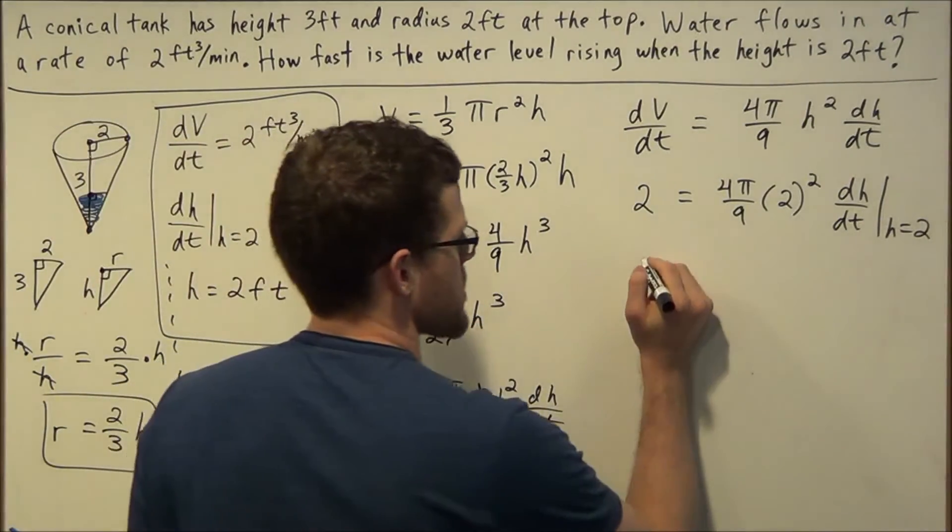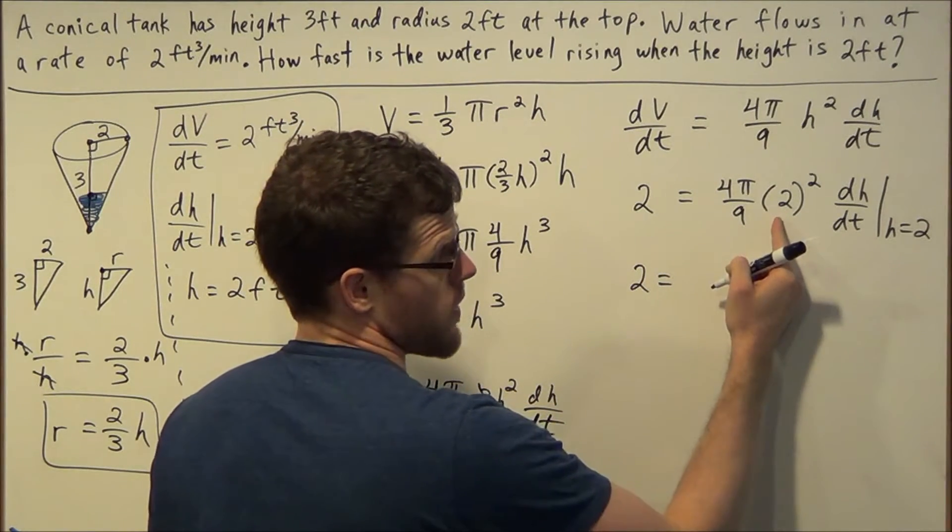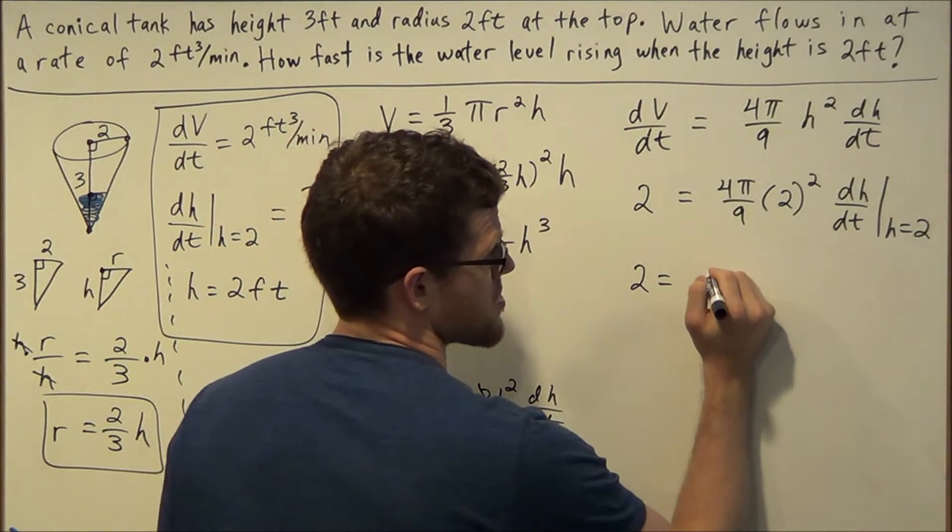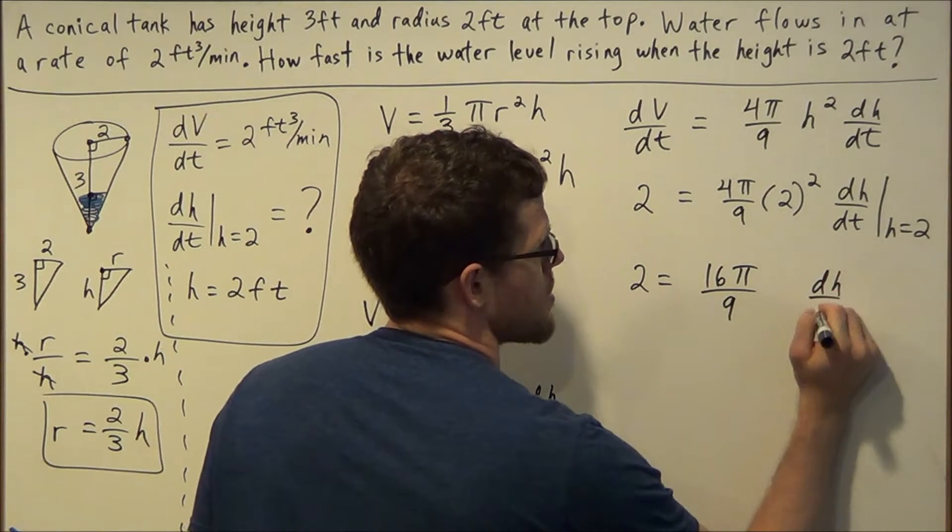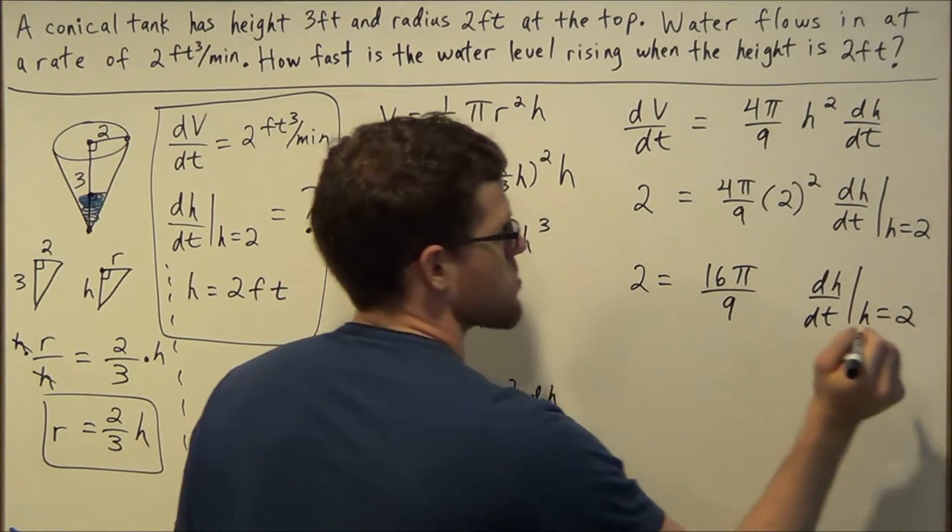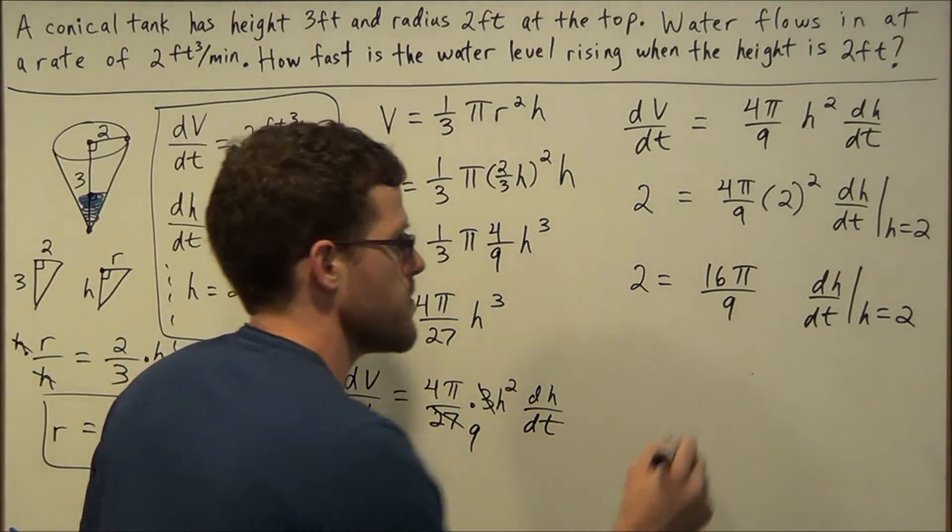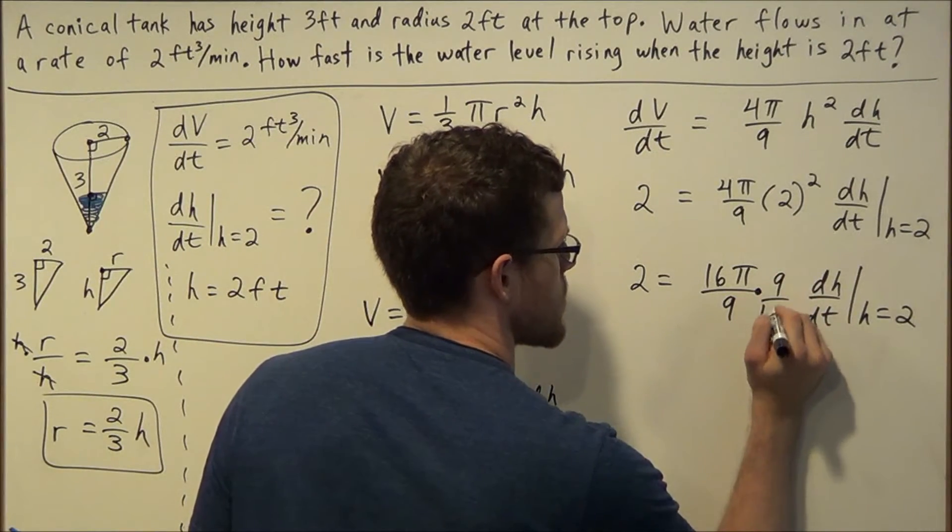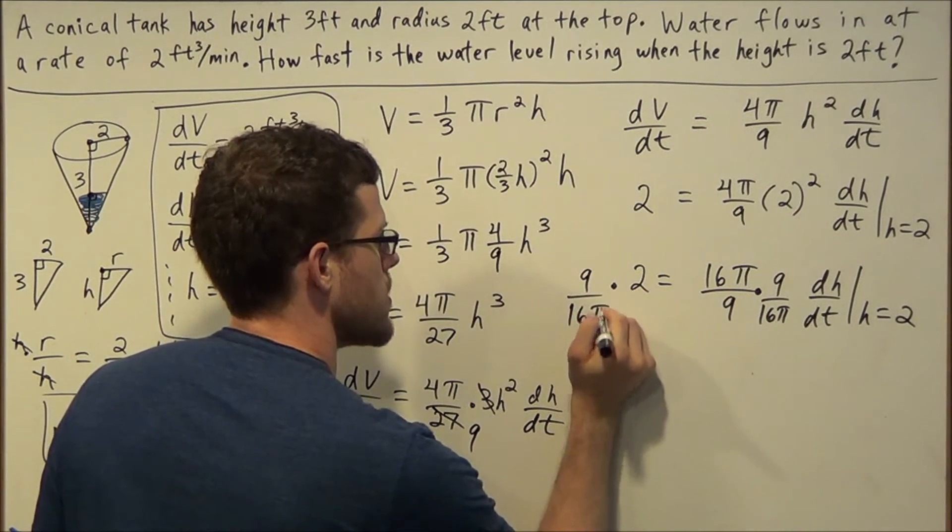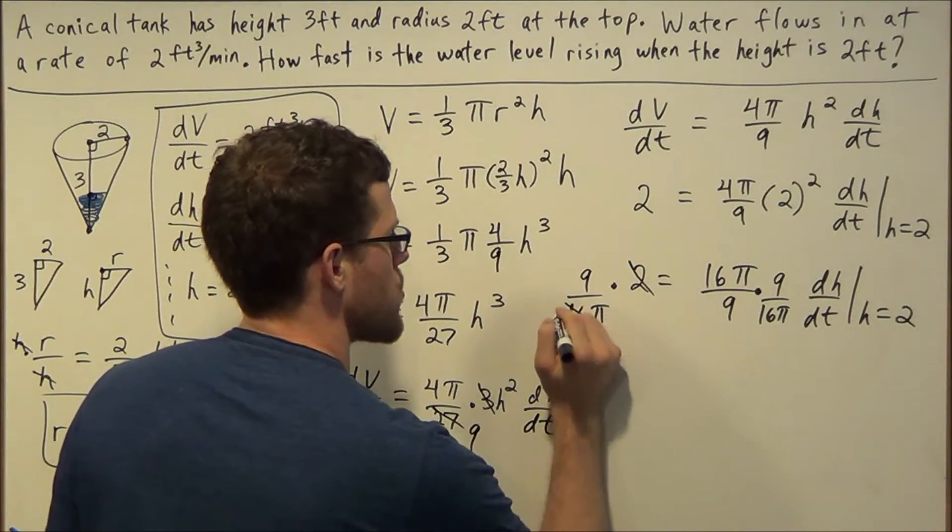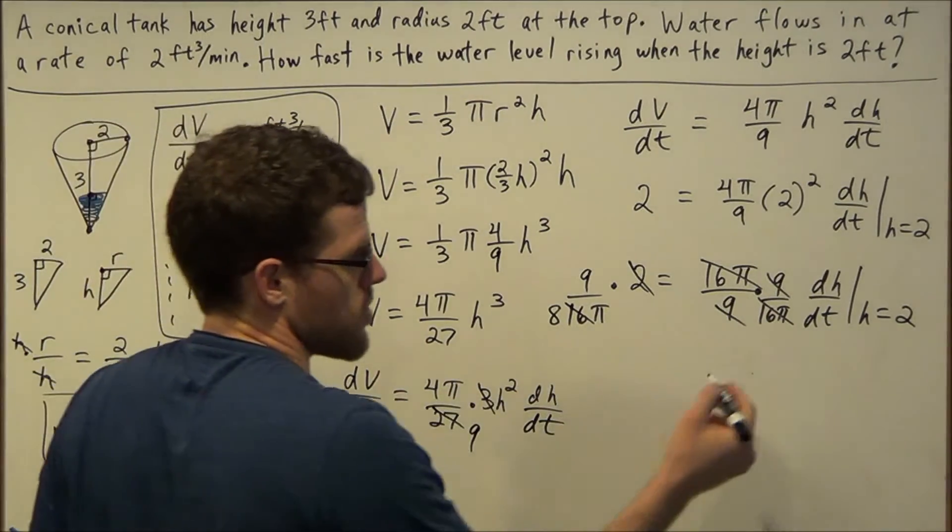The right side will simplify a bit. This is 2 equals, and we'll have 4π times 2 squared is going to give us 4 times 4π, which is 16π/9, times dh/dt at h equals 2. So to solve for this unknown rate, we're going to multiply both sides by the reciprocal of this fraction here. So we can multiply by 9/(16π) on both sides. 2 over 16 will reduce to 1 over 8, and this fraction here, both of them will cancel each other out.